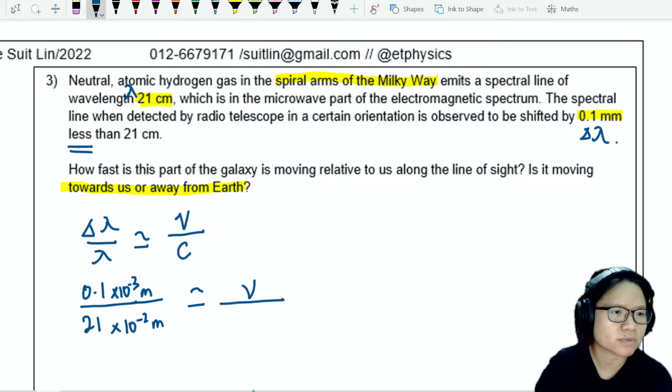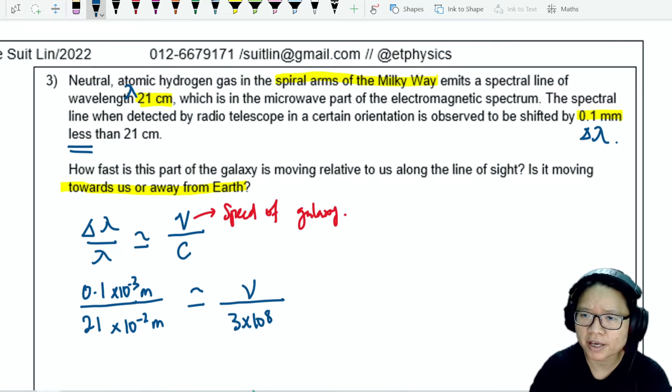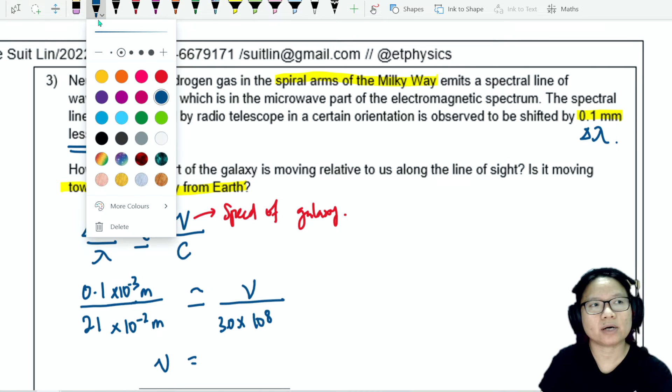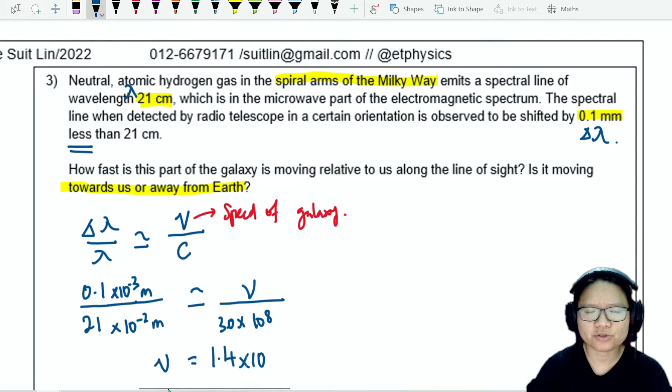I'm looking for how fast is the recession, though it may not be recession. This here is the speed of the galaxy. We can find c, 3 times 10^8 from your data booklet. From here, we can find our value of V.